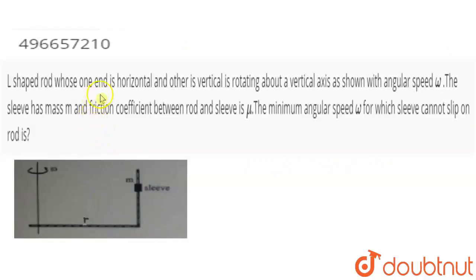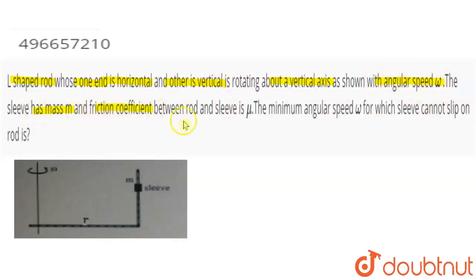Hi students! So this question has come: an L-shaped rod whose one end is horizontal and the other end is vertical is rotating about a vertical axis as shown, with angular speed omega. The sleeve has mass m and the frictional coefficient between the rod and sleeve is mu. Find the minimum angular speed omega for which the sleeve cannot slip on the rod.